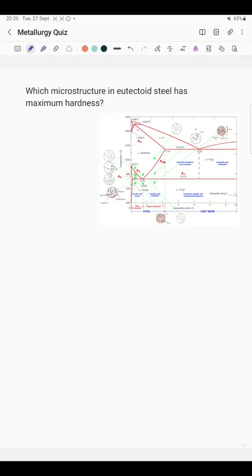Hello everyone, today's metallurgy quiz question is: which microstructure in eutectoid steel has maximum hardness? First, we will see what is eutectoid steel. In the iron-iron carbide phase diagram, steel is categorized into three types based on carbon content and microstructure.